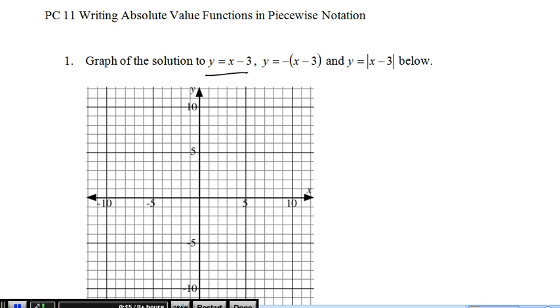So we'll graph y equals x minus 3 in black, and as usual in red, we'll graph the absolute value equation. Let's start out with our black equation, y equals x minus 3. Y intercept of negative 3, slope of 1. And there is y equals x minus 3.